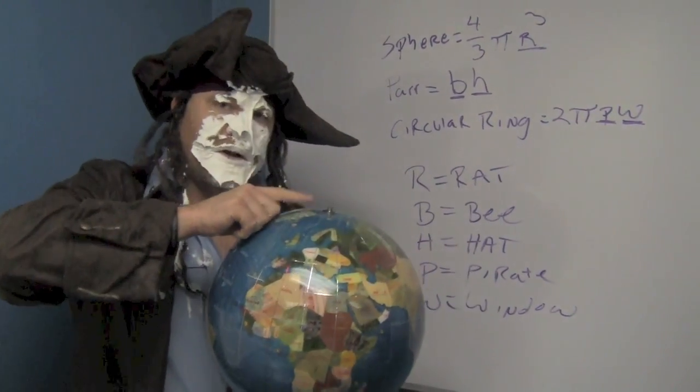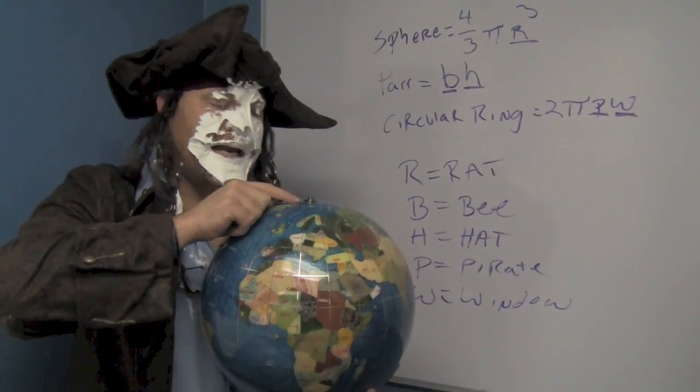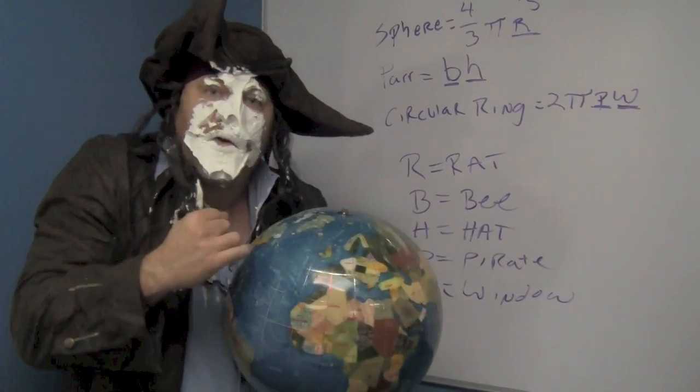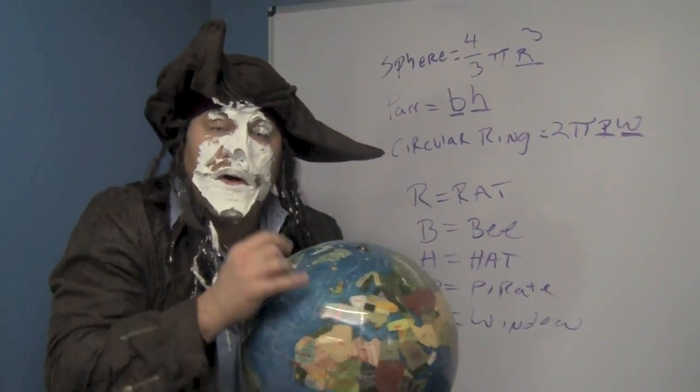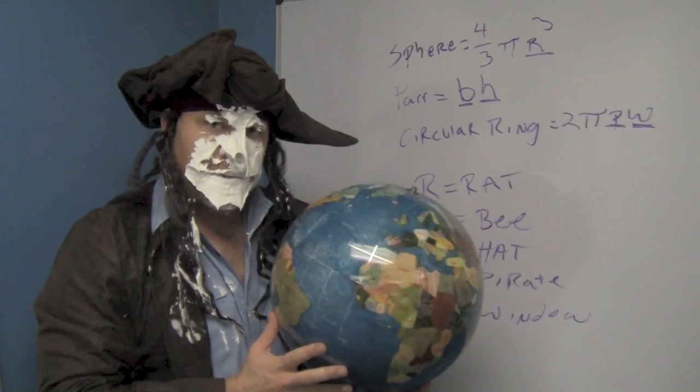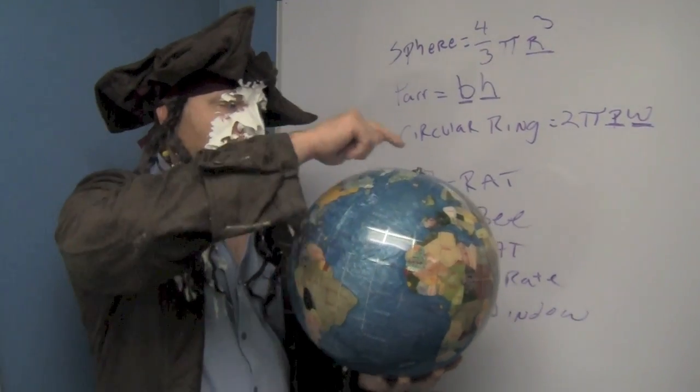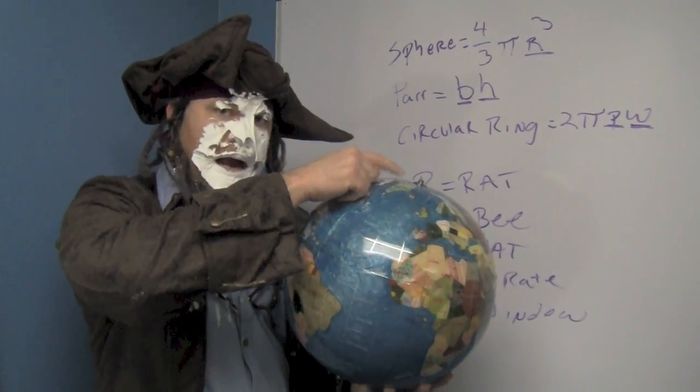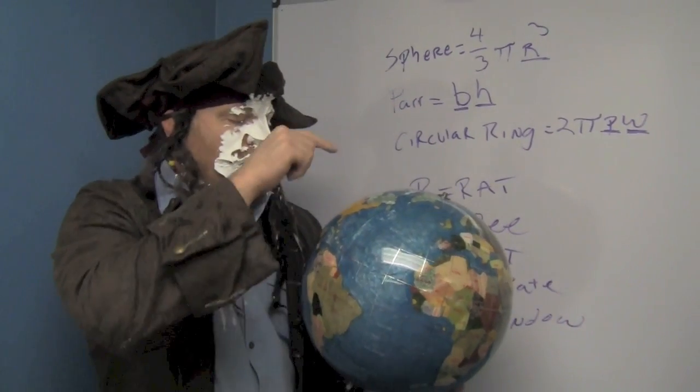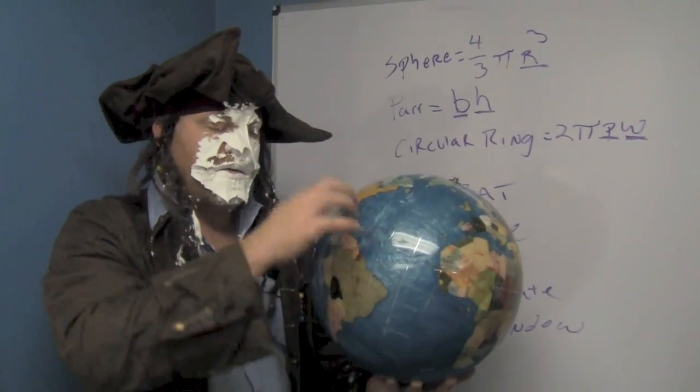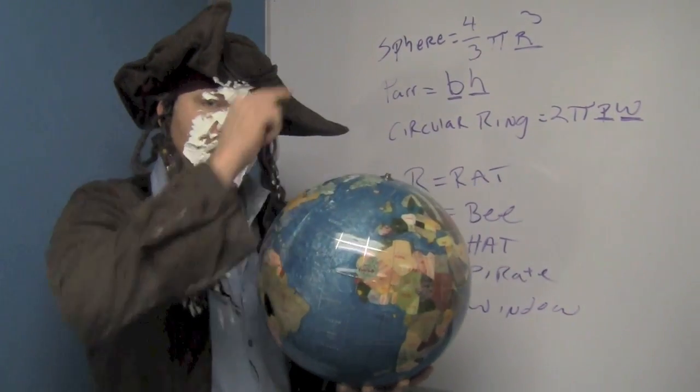On top of the globe I want you to imagine a piece of pie and it's getting eaten by a rat, but the rat is frozen because it's the north pole. So a sphere is 4/3 pi R for rat, and he's frozen. Sphere equals 4/3 pi R cubed.